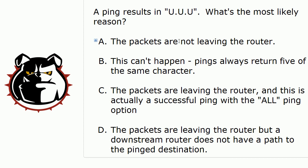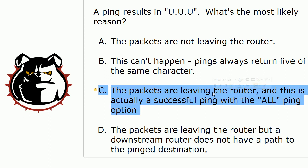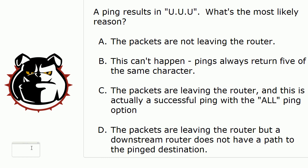So we also got to see as a little bonus what it looks like when the packets aren't leaving the router. But the correct answer is D: the packets are leaving the router but a downstream router doesn't have a path to that pinged destination. C here is a red herring — I don't throw these in too often but Cisco does it every once in a while so I like to do it too. It's a nonsense answer that makes absolutely no sense, so stick with D.